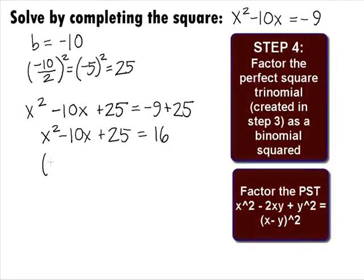In Step 4, we want to factor the perfect square trinomial created in Step 3 as a binomial squared. When we do that, we will get x minus 5 quantity squared equals 16.